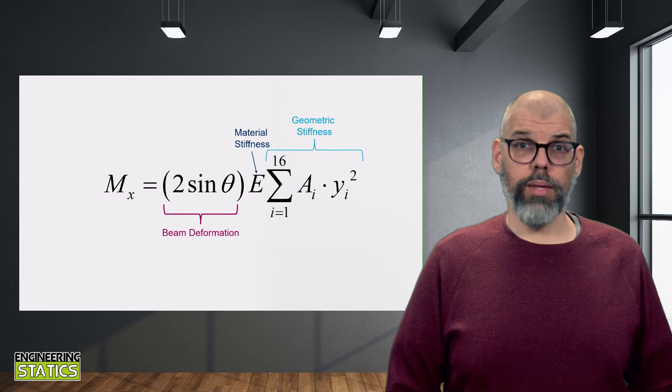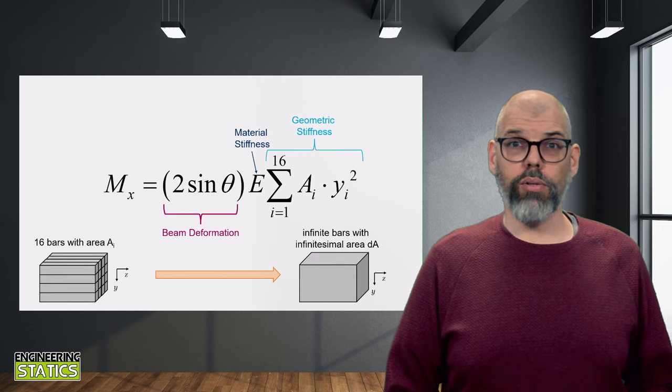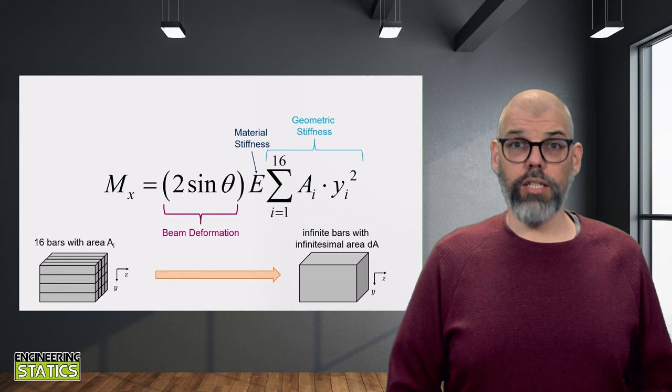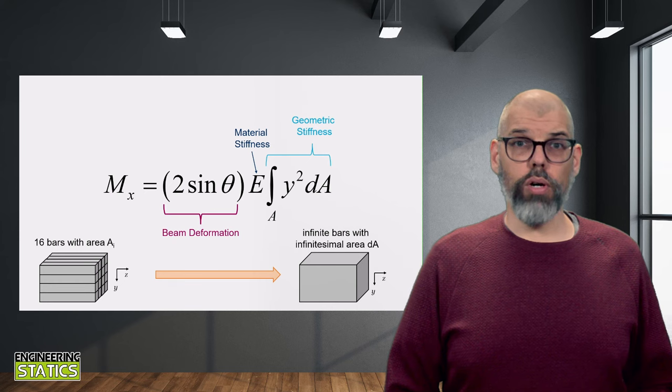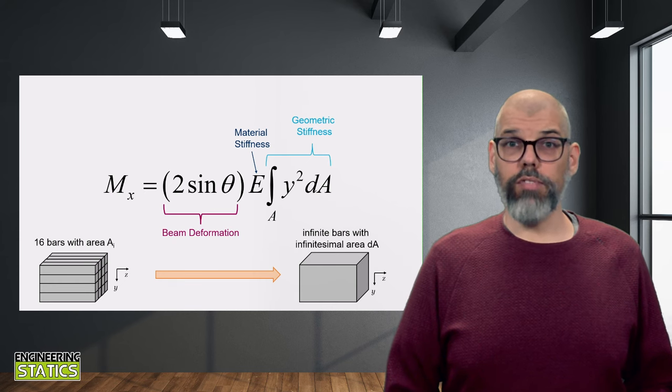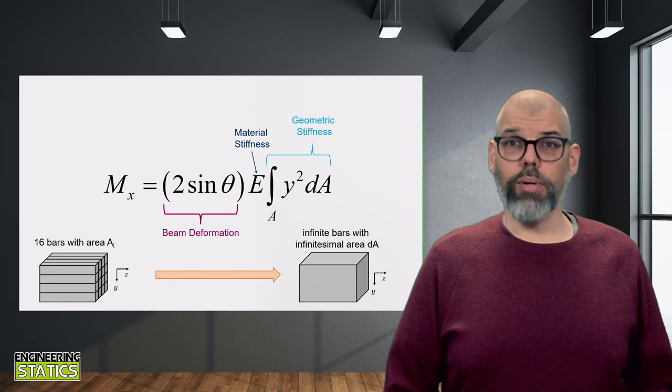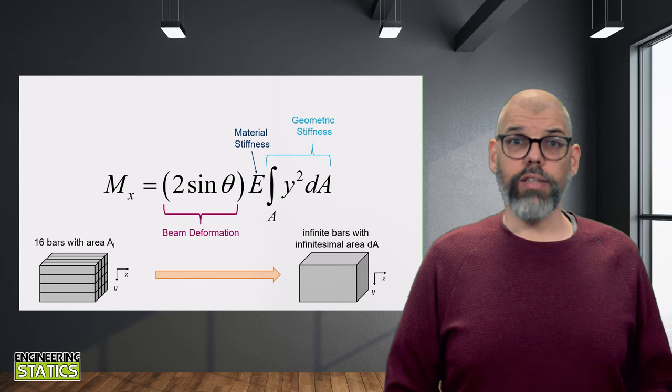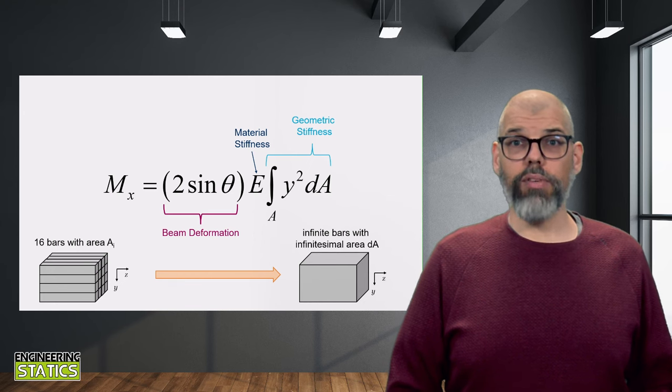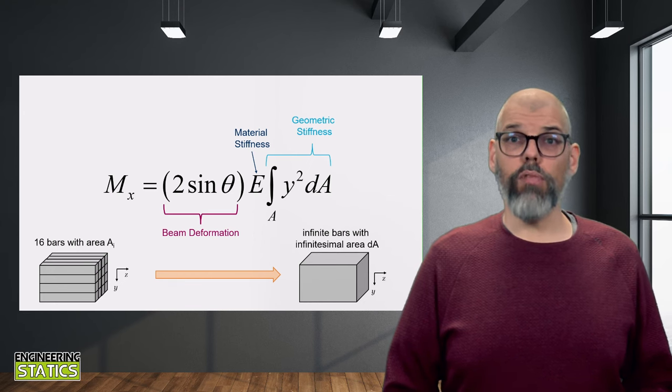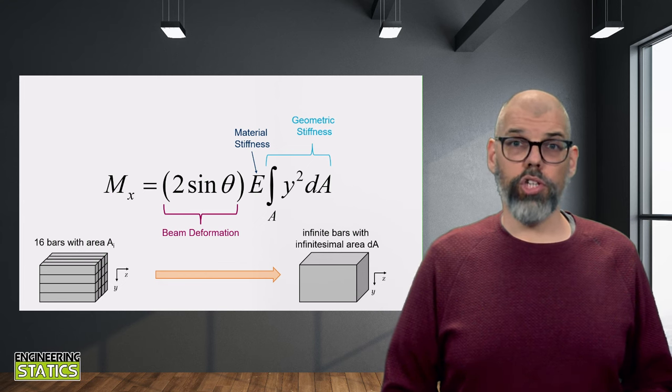The final step is to realize that the real cross-section is not made up of 16 springs or 16 rectangular bars, it is a continuum. So the summation will only work in the limit as the area ai becomes infinitely small, turning the discrete summation into an infinite summation, otherwise known as an integral. And there we have it, the geometric bending stiffness or contribution of the beam cross-section for bending about the x-axis is given by the integral of y-square da. This quantity is known as the area moment of inertia about the x-axis, or I sub x.